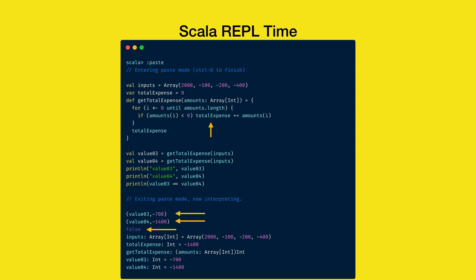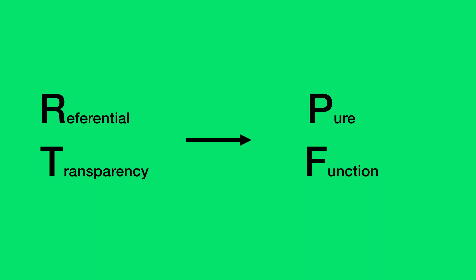So what does this mean? It means that getTotalExpense is not referentially transparent. Even though we call getTotalExpense twice with the same inputs, replacing it with its value changed the program behavior, as the two calls gave two different outputs. To conclude, a function can be referentially transparent if and only if it is a pure function. Impurity breaks referential transparency.